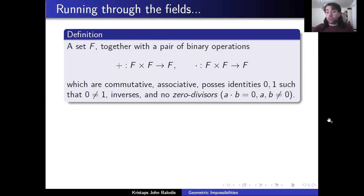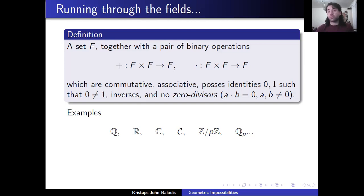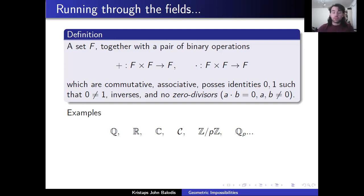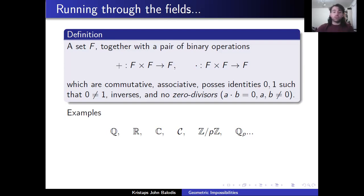So what are some examples of fields? Well, of course, the rational numbers. Under our usual interpretation of multiplication and addition, you can combine the rational numbers in all these sorts of ways. They have inverses for all of these operations — I suppose I forgot to mention that above. There are always inverses for all the operations, and you stay within the field of rational numbers.